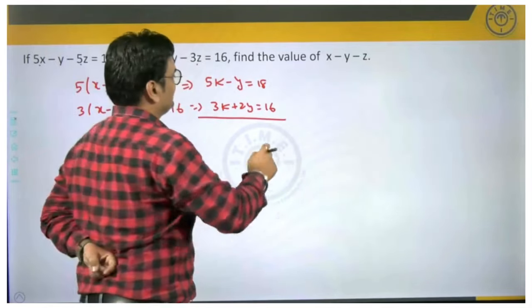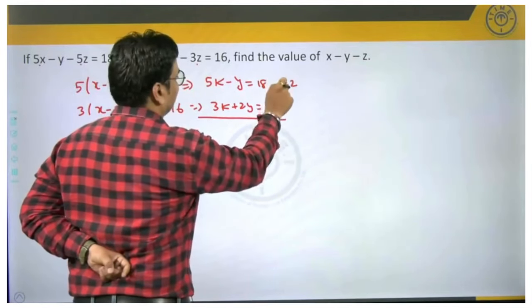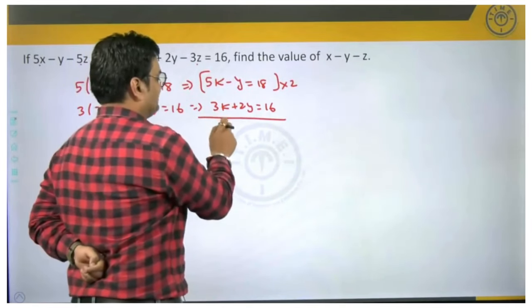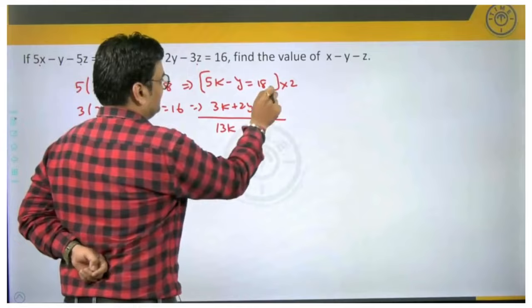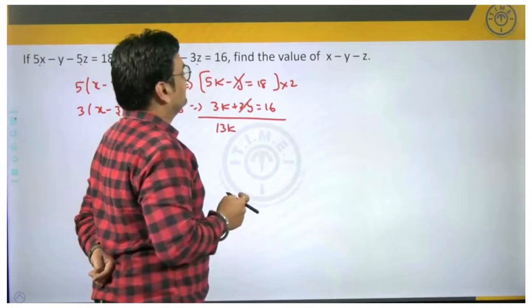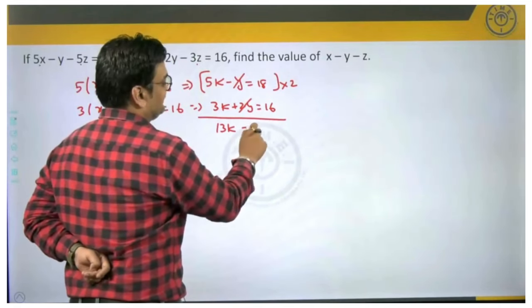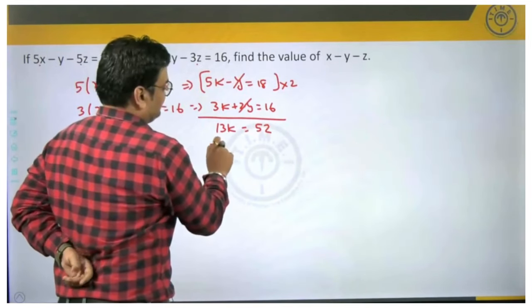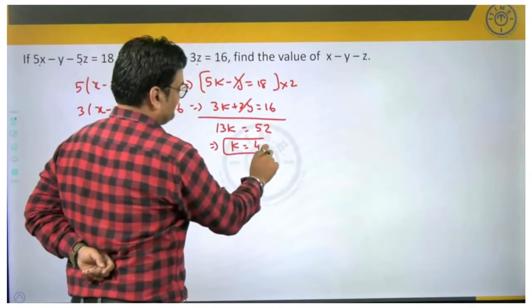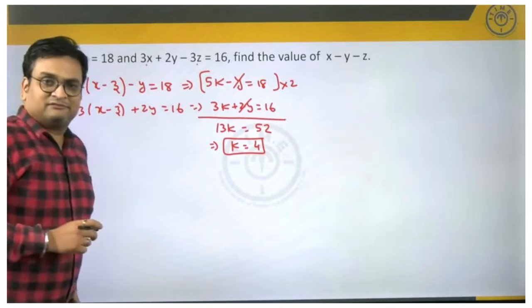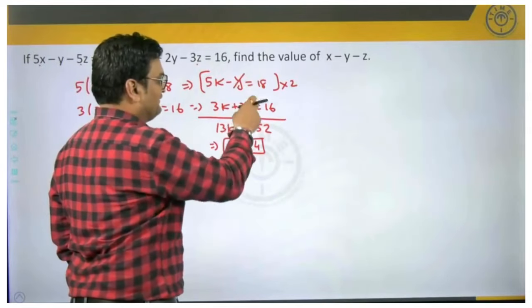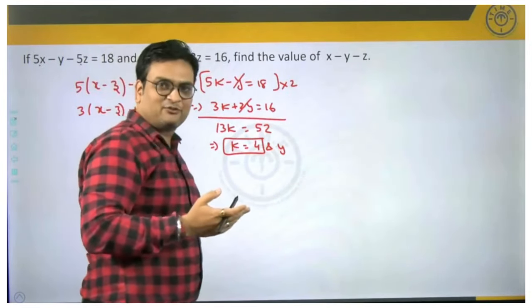Let us try to eliminate y here. So let us multiply the first equation by 2 entirely and add the 2 equations. When you do that, 2 into 5, 10 plus 3, 13k. 2 into minus 1, minus 2y plus 2y cancels out. 2 into 18 is 36, 36 and 16 is 52. If 13k is 52, we can say k will be equal to 52 by 13 which is 4. So we got the value of k. Now we can substitute it back in either of the 2 equations, we can get the value of y also.